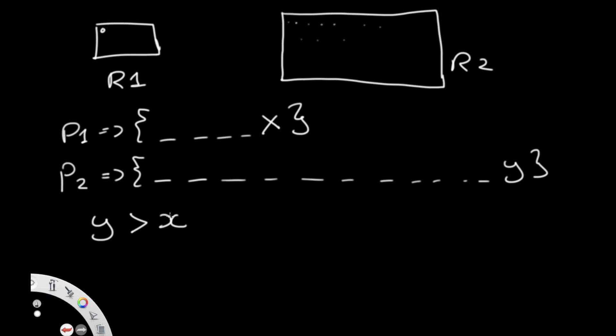Let's think about the most intuitive way to solve this. My first thought was: pick a random rectangle — either R1 or R2 — and then pick a random point from it. This actually sounds pretty valid, but it's not correct. We have to go back to the word uniformly, because doing this is not going to give us uniform results.